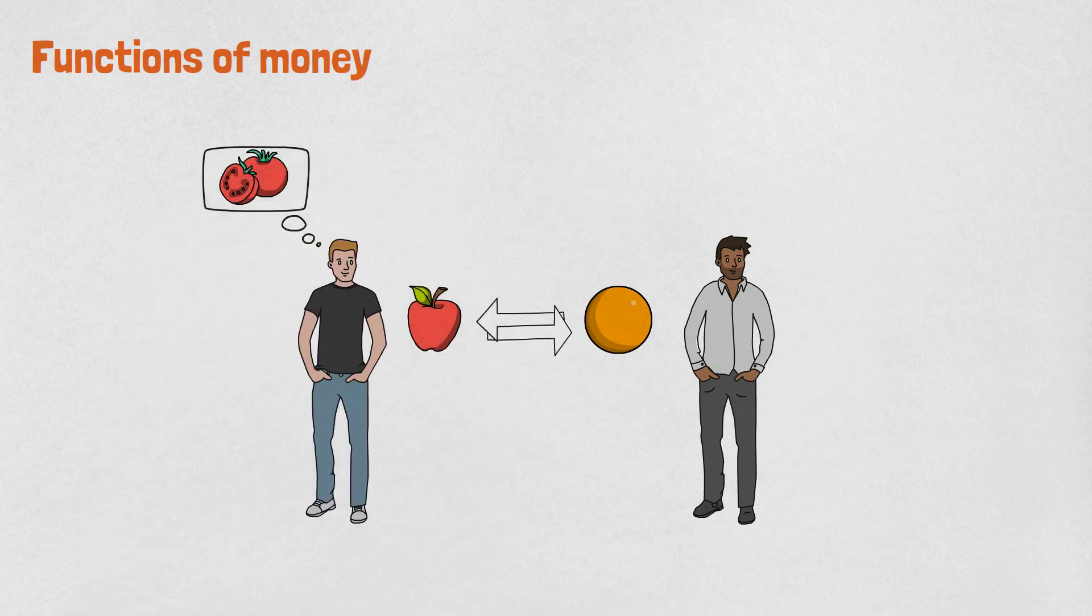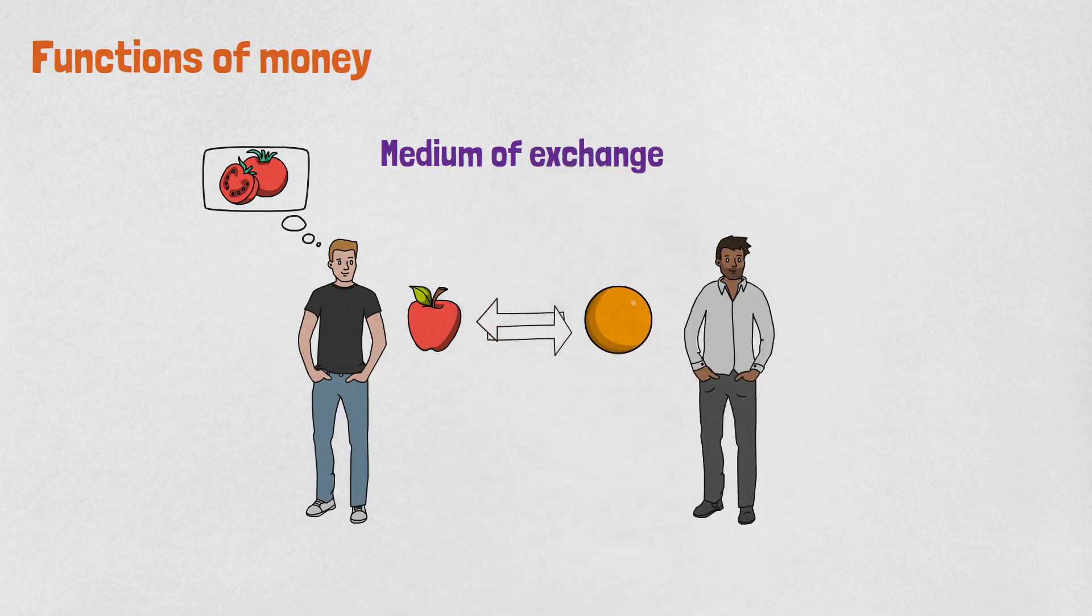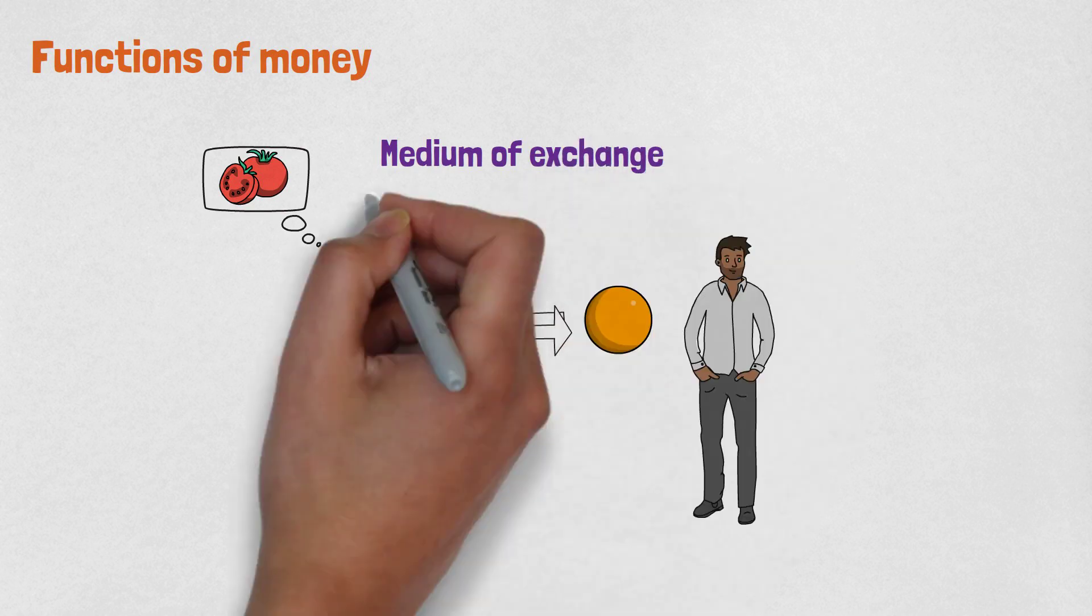In that case, the person with the orange would have to trade his orange with someone who has a tomato to be able to trade with the person that has an apple. The solution to this problem is to have a medium of exchange that is accepted by all individuals and that is the first function of money.